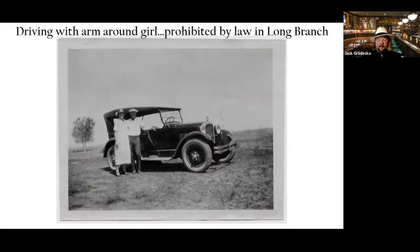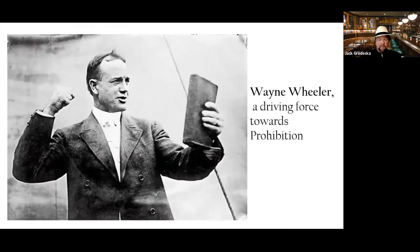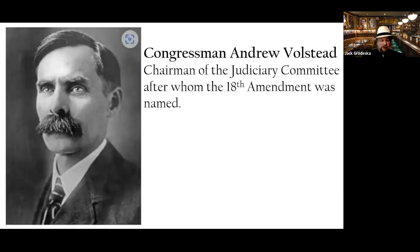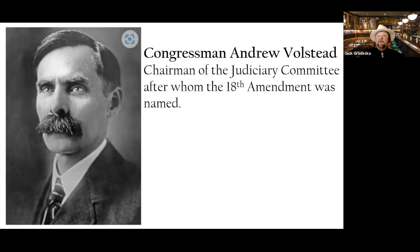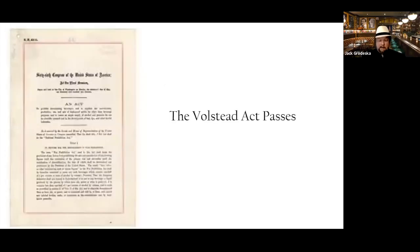The Anti-Saloon League's Wayne Wheeler, an attorney by trade, conceived and drafted the bill which was named after Andrew Volstead. Volstead was the chairman of the House Judiciary Committee and managed the legislation. In 1917, Congress sent the 18th Amendment — known as the Prohibition Amendment or the Volstead Act — to the states with a seven-year deadline for passage, the first amendment to have a time restriction. Within 13 months, the states had ratified it.